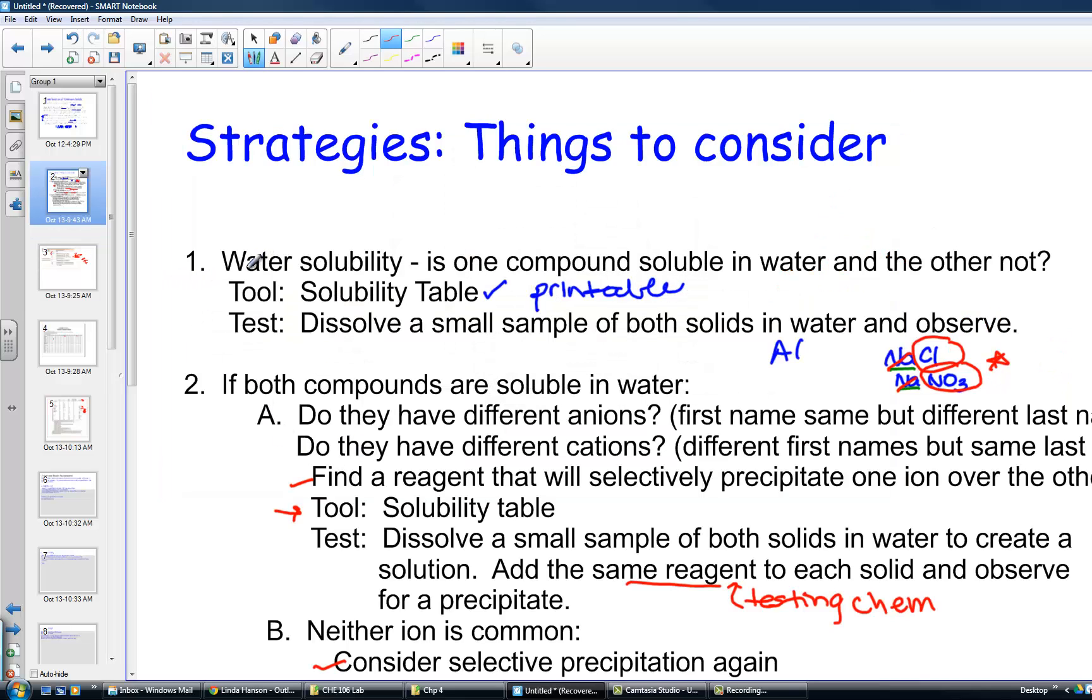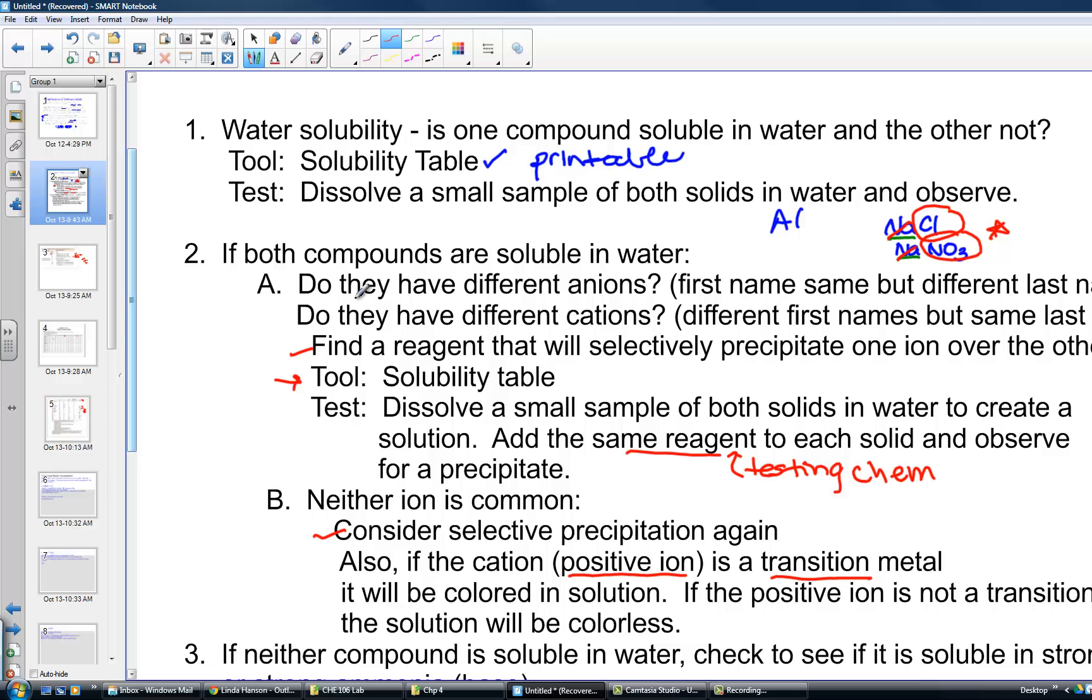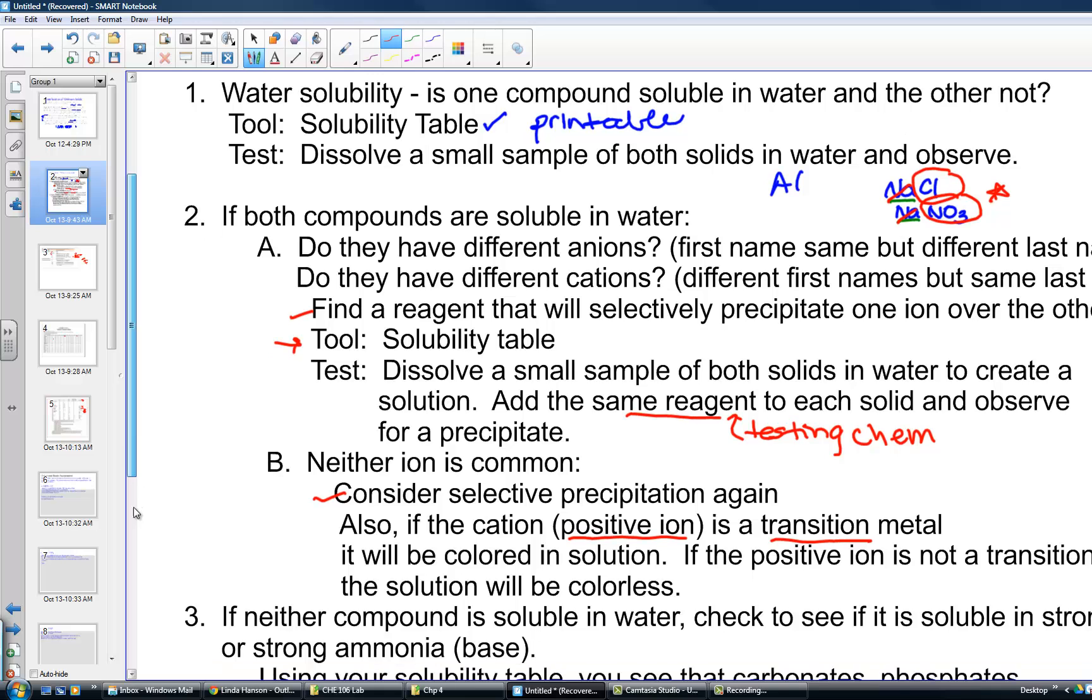Test one, are they both soluble in water, yes or no? That's a quick, easy test. If one is soluble and the other is not water soluble, I don't need a reagent. Test number two, what if they're both soluble? I'm looking at selective precipitation, or perhaps an observation of a colored solution if it's a positive transition metal that carries a color.